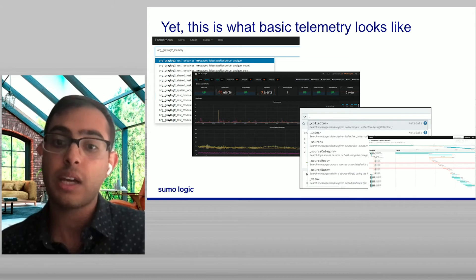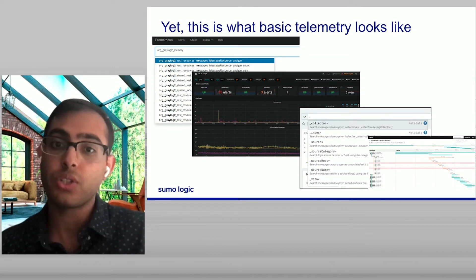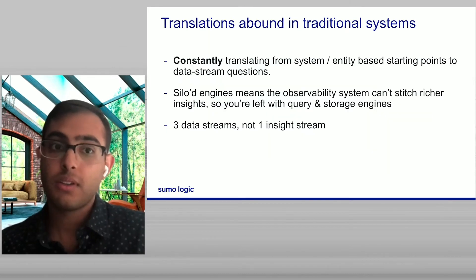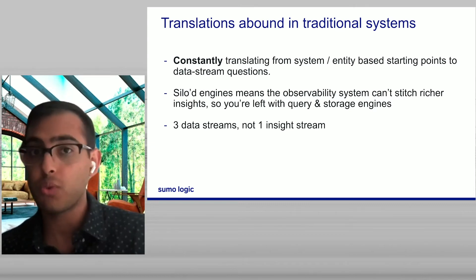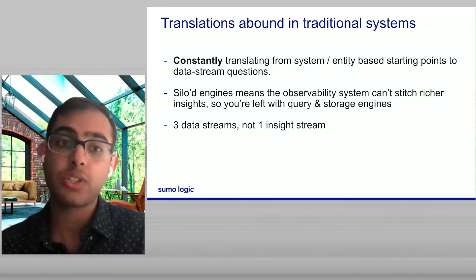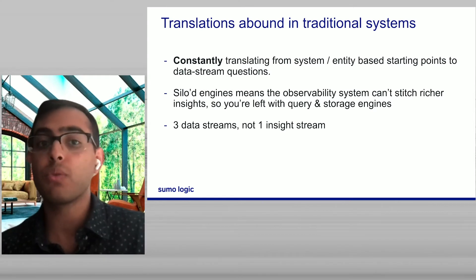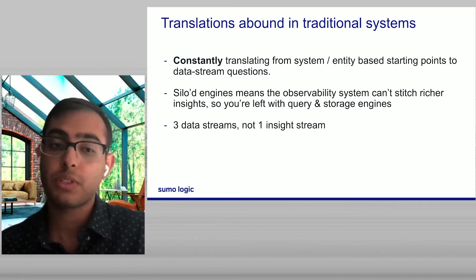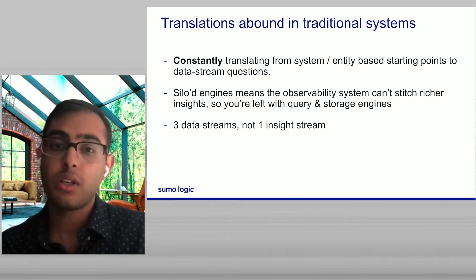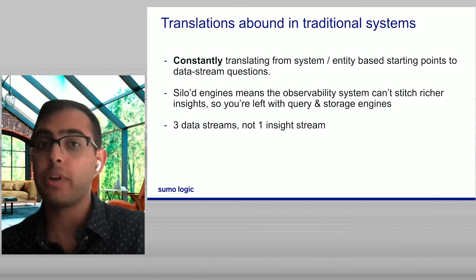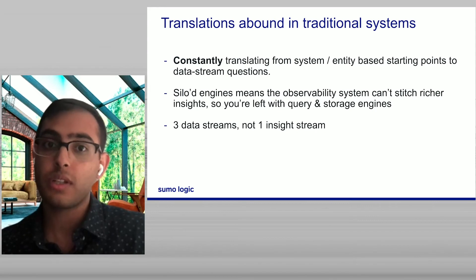Instead, you're left with a Grafana-style dashboard, just trying to put together the right data signals on the right dashboard to make the correlations manually. Translations abound in traditional systems. You're constantly left translating from your system questions to your data stream questions, always saying, how do I translate that question about, is this host healthy, to what is the CPU and memory of that actual host, and how do I write it in the query language that this tool supports? Siloed engines means that your observability system is no better than those individual data streams it sees. You're left with query and storage engines, and not really a true observability system. Three data streams, not one insight stream. And what you really needed was that one insight stream.